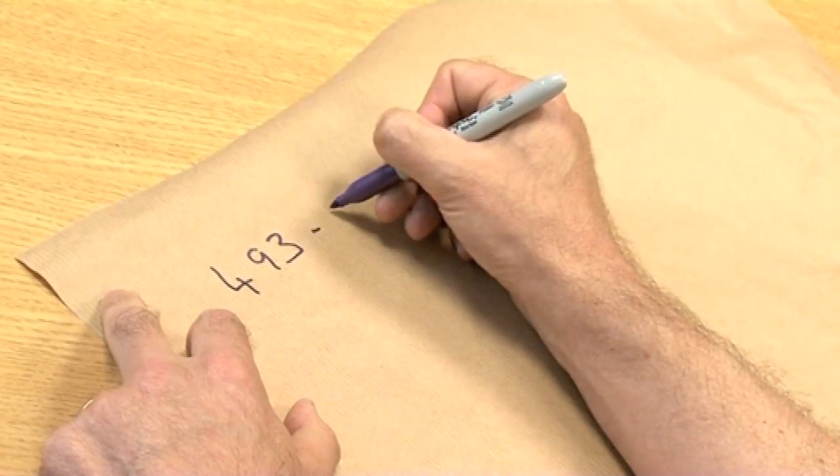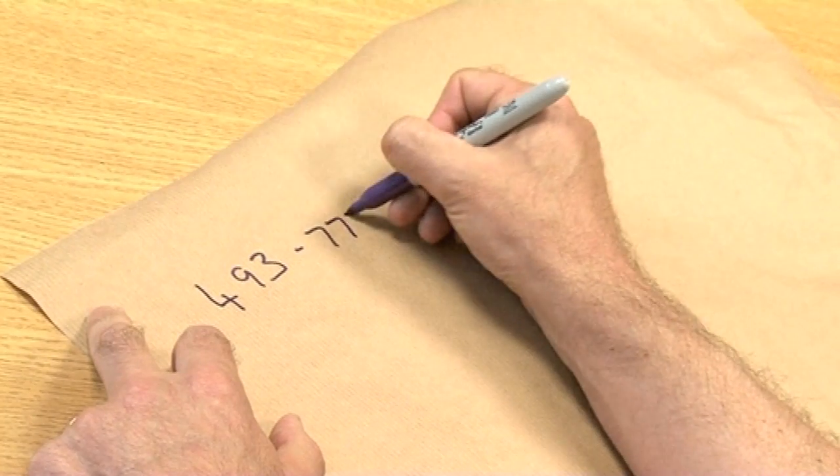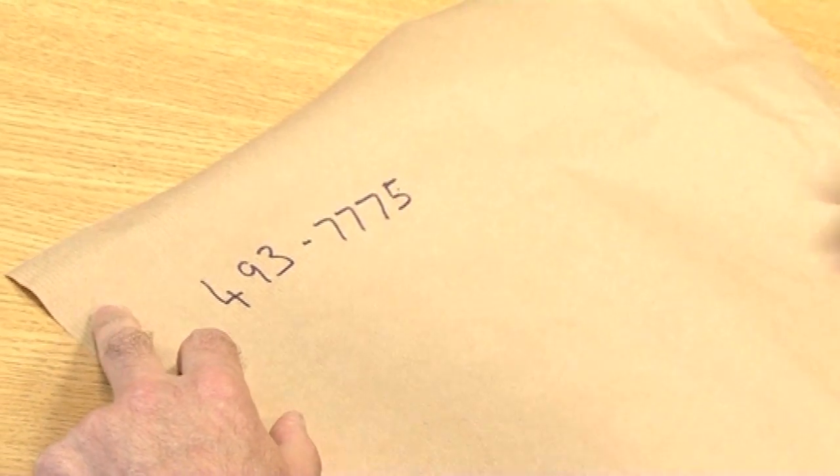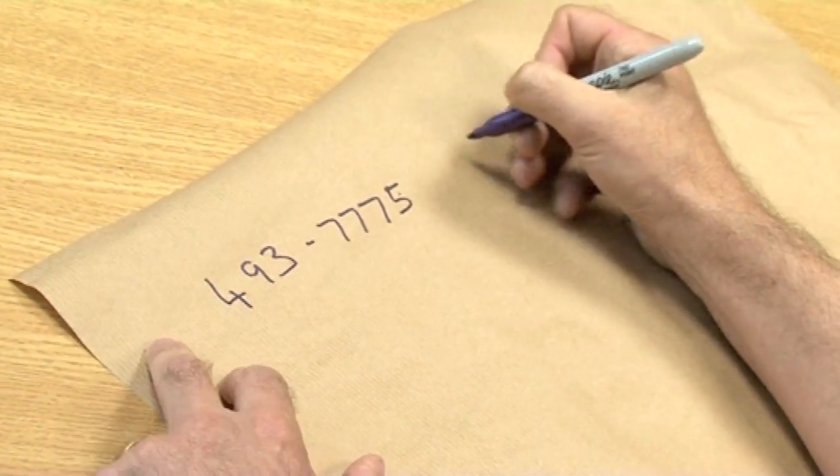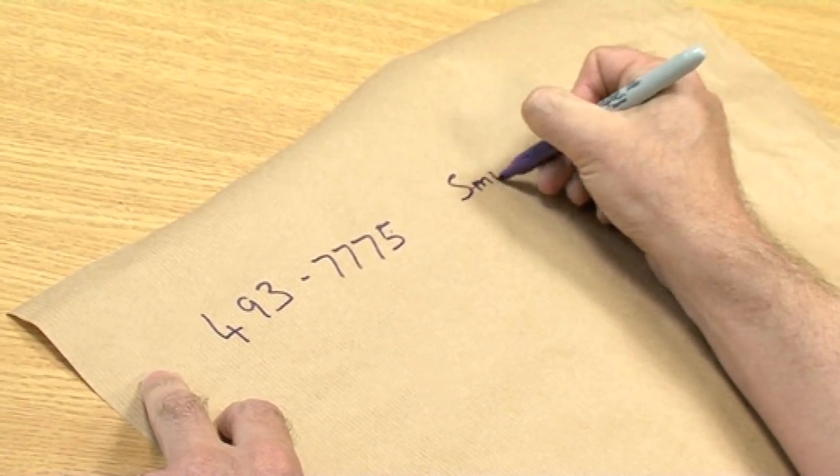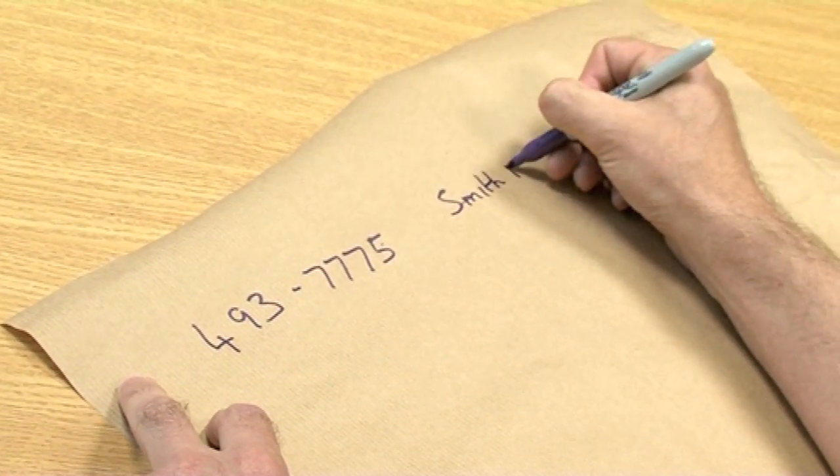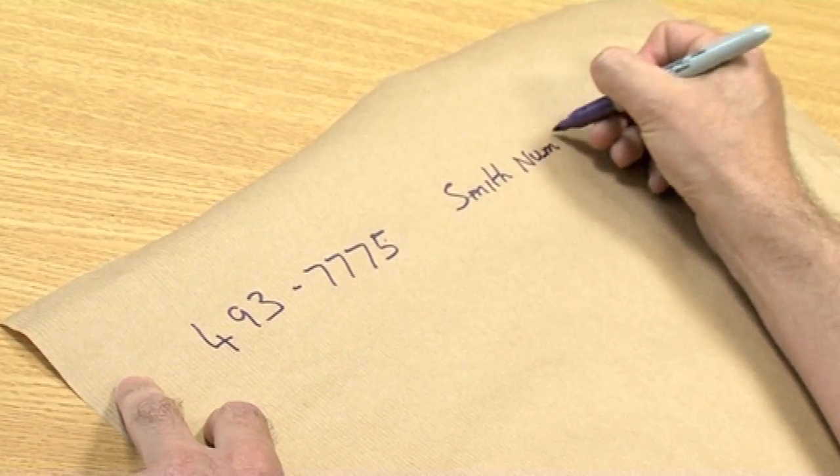Four, nine, three, seven, seven, seven, five. And that's a Smith number? That's a Smith number. And whose number was it? It was, in fact, Harold Smith.